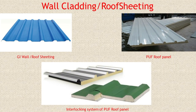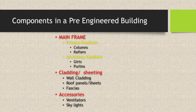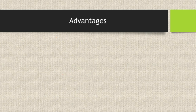If we need temperature control, we can use PUF roof panels. In GI sheeting, we can add foam board insulation. The panels can be designed with interlocking grooves using a male end and female end connection system. That is the wall cladding system. Various accessories include ventilators and skylights, where you cut the roof sheeting so that sunlight can enter the industry. That is the main concept of PEB.